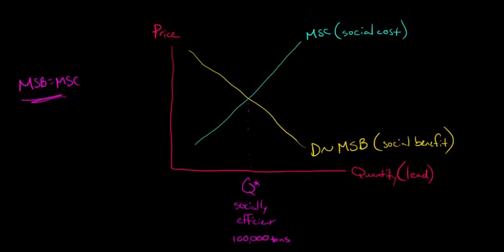Now, here is the nature of the externality. For the lead smelting company, their cost is lower than the marginal social cost, because they only consider their marginal private cost. And by private cost, I mean the cost to the smelter itself.